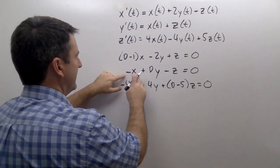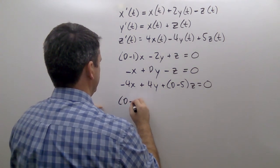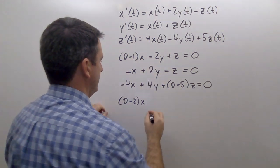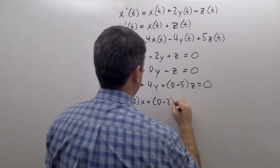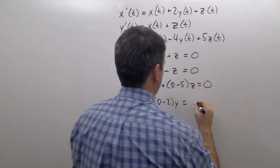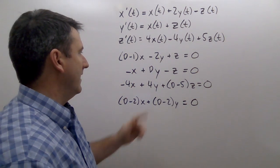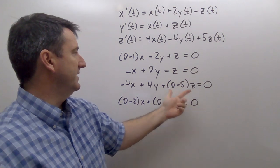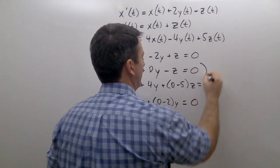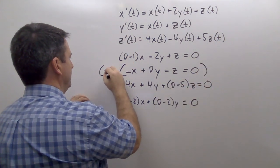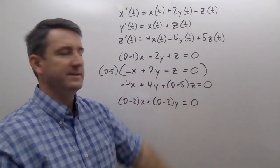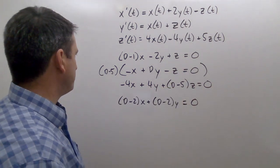(D minus 1) plus negative 1 times x gives us (D minus 2)x. Negative 2y plus Dy gives (D minus 2)y. The z's add to 0. Now in order to eliminate z from the second and third equations, we're going to need to multiply the second equation by (D minus 5).